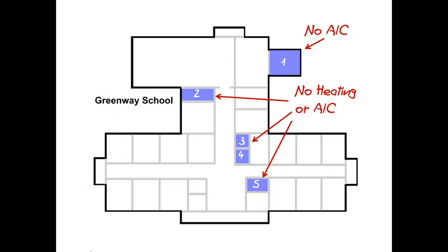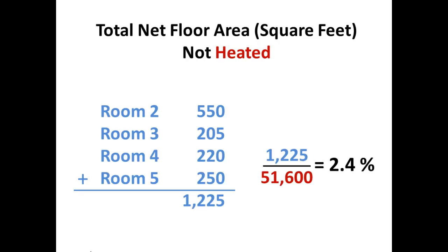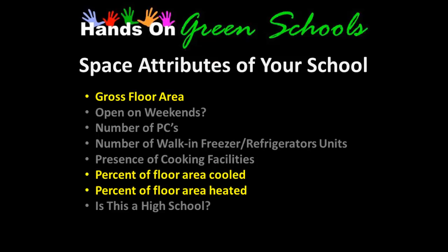We're going to do the same thing with heating — look in there, find out what spaces are heated, tally those up, and come up with a percent of space that is not heated. We subtract that from 100% and we get 97.6% of space that is heated. Hold on to these values because when it comes time to input your data into Portfolio Manager, you're going to need these numbers. That concludes our presentation on space attributes for your school, specifically those related to floor area.